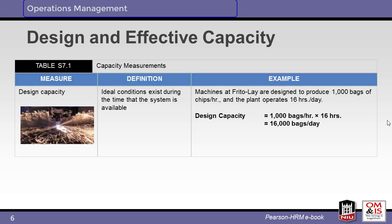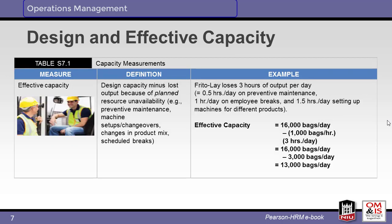Here's an example of how design capacity is calculated at Frito-Lay. Based on ideal conditions, each machine should produce 16,000 bags of chips per day. The effective capacity, however, takes into account planned downtime for maintenance, breaks, and setup. The result is an effective capacity of 13,000 chips per day — less than the design capacity.